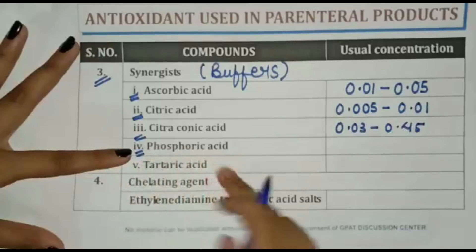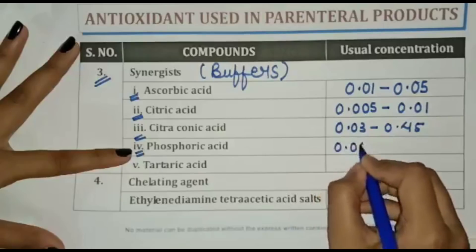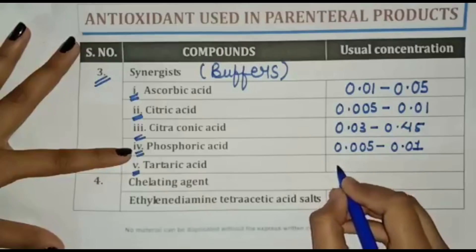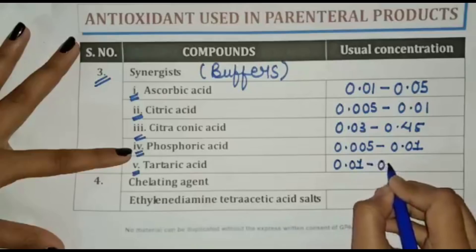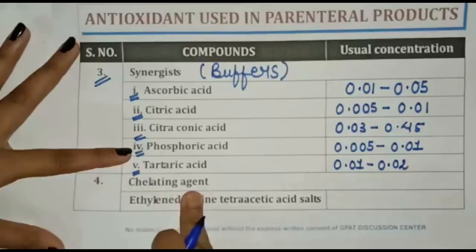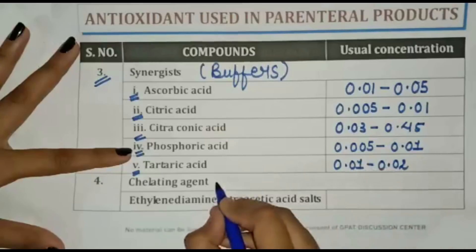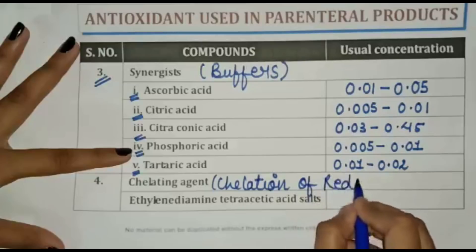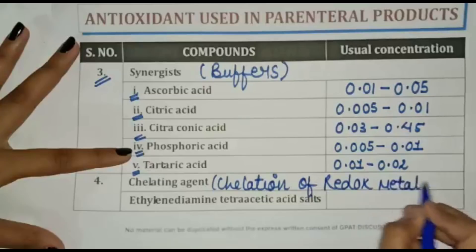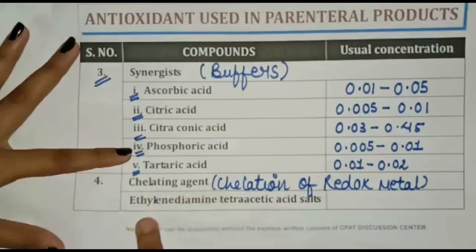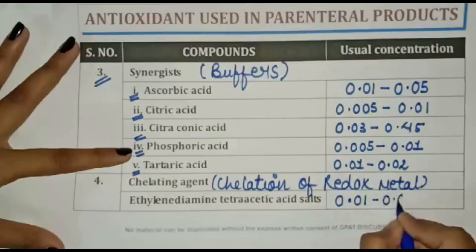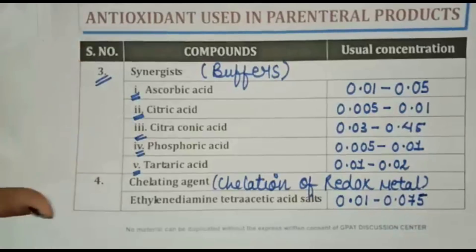Phosphoric acid concentration is 0.005 to 0.01. Tartaric acid concentration is 0.01 to 0.02. Chelating agents inhibit oxidation by chelation of redox metals. The concentration of the chelating agent ethylenediamine tetraacetic acid (EDTA) salt is 0.01 to 0.075. That was all about antioxidants used in parenteral products. Thank you for watching the video.